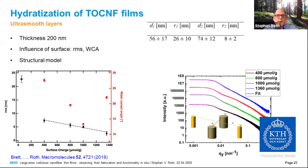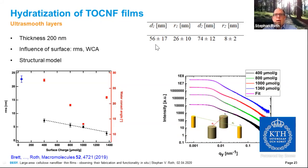Using grazing incidence small-angle X-ray scattering for these four samples, we can make a structural model. Monitoring intensity as a function of Qy — structure parallel to the sample surface — for four surface charges (400, 800, and 1036 micromole per gram), with fits using a cylindrical model as for enzymatic cellulose, we observe two structures. Structure 1 has a distance of 56 nanometers with a diameter of 26 nanometers. Structure 2 has a distance of 74 nanometers and a radius of 8 nanometers. This resembles the agglomeration structure seen with enzymatic cellulose.